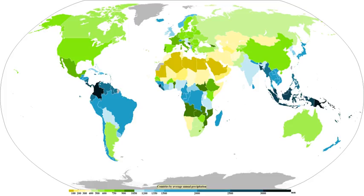The likelihood or probability of an event with a specified intensity and duration is called the return period or frequency. The intensity of a storm can be predicted for any return period and storm duration from charts based on historic data for the location. The term '1 in 10 year storm' describes a rainfall event which is rare and is only likely to occur once every 10 years, so it has a 10% likelihood any given year. The '1 in 100 year storm' describes a rainfall event which is extremely rare with a likelihood of only once in a century, so has a 1% likelihood in any given year. As with all probability events, it is possible though unlikely to have two 1 in 100 year storms in a single year.